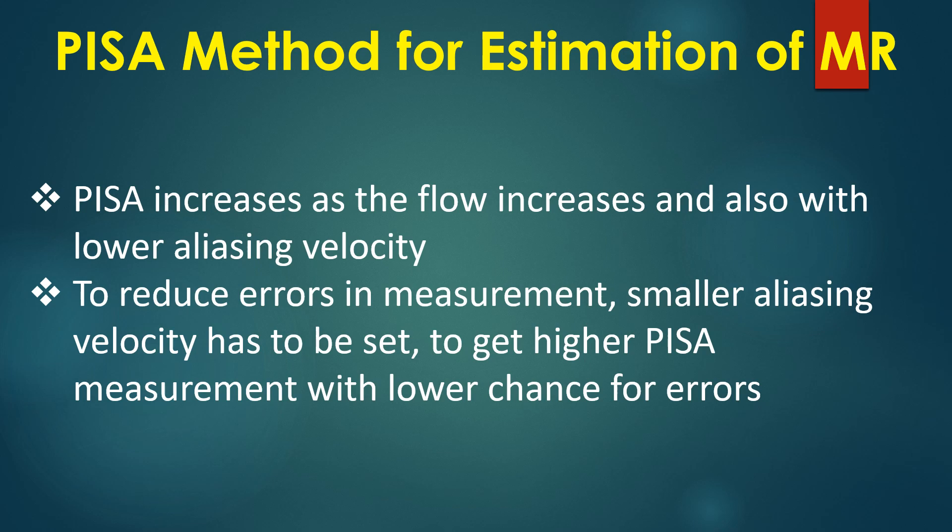To reduce errors in measurement, a smaller aliasing velocity has to be set to get a higher PISA measurement with a lower chance for errors.